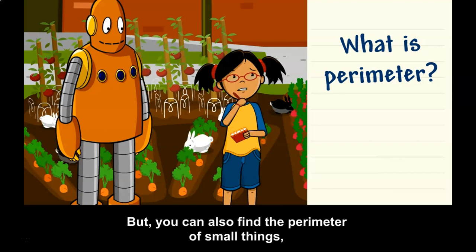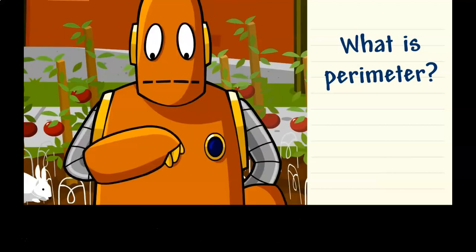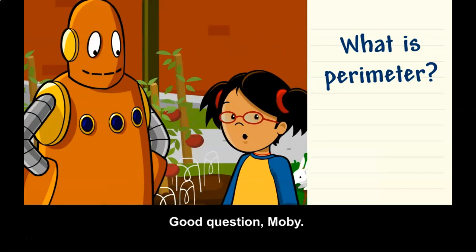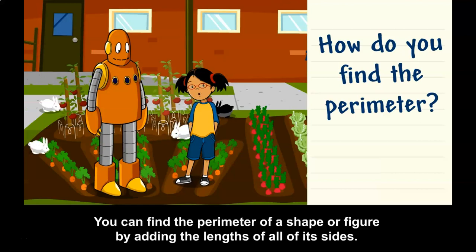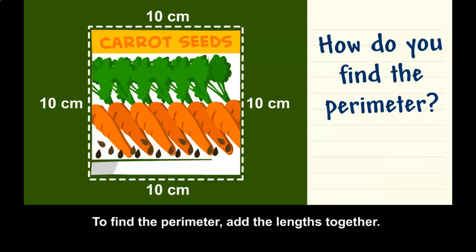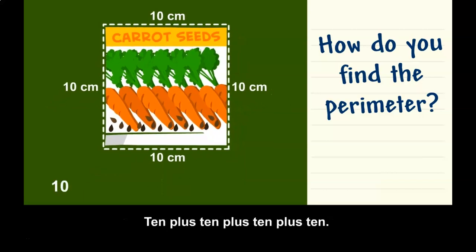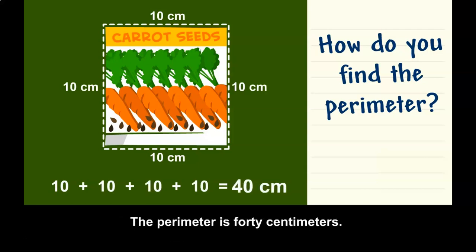But you can also find the perimeter of small things, like my notebook. How do you find the perimeter? You can find the perimeter of a shape or figure by adding the lengths of all of its sides. Each side of this packet of seeds is 10 centimeters long. To find the perimeter, add the lengths together: 10 plus 10 plus 10 plus 10. You can skip count by 10 to find the sum: 10, 20, 30, 40. The perimeter is 40 centimeters.